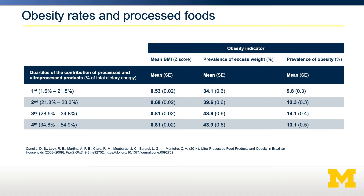So how does this relate to obesity rates? Here's another cross-sectional study done in Brazil. They broke people down into four different quartiles based on the percent of their calories that were from ultra-processed foods. As you go from quartile one to quartile four, there's more ultra-processed food in the diet. The obesity rates increased from 9.8% in people who ate mostly unprocessed foods compared to the fourth quartile, where that increased to about 13.1%. This suggests a relationship between the amount of ultra-processed food in your diet and your risk for obesity.